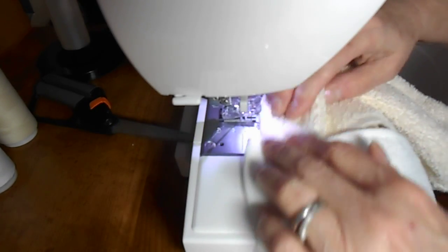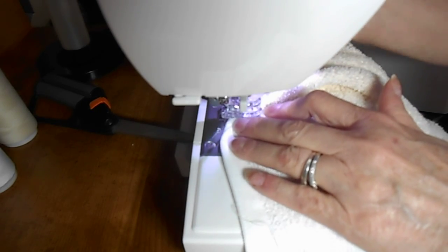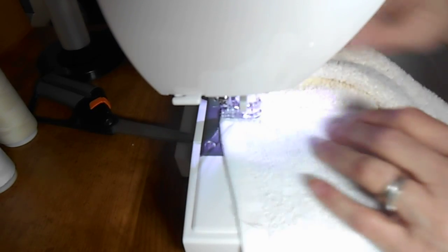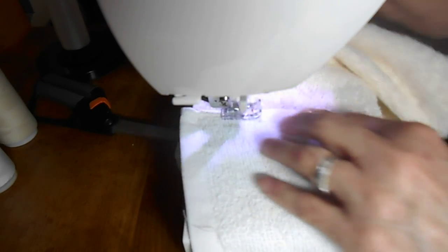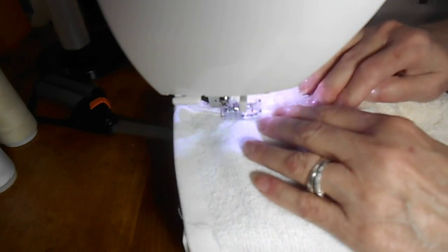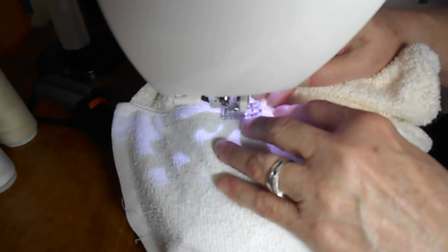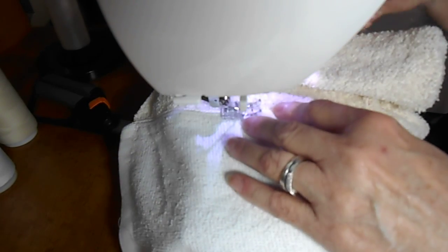So I just sew down, I sew close to the edge, overlapping them. And again, if you're using the invisible thread, the monofilament thread, you're not going to see this. So all the way down,